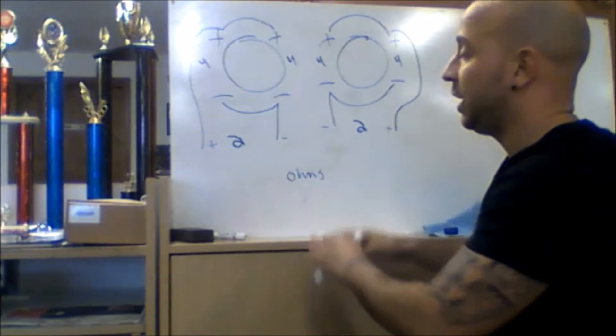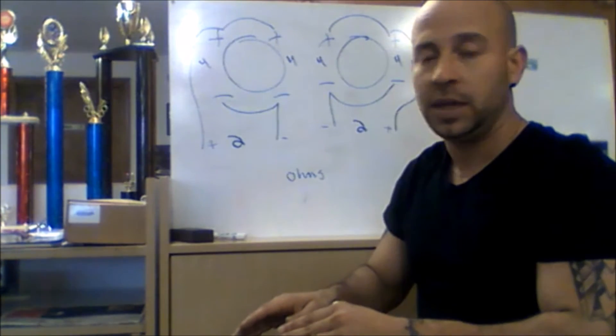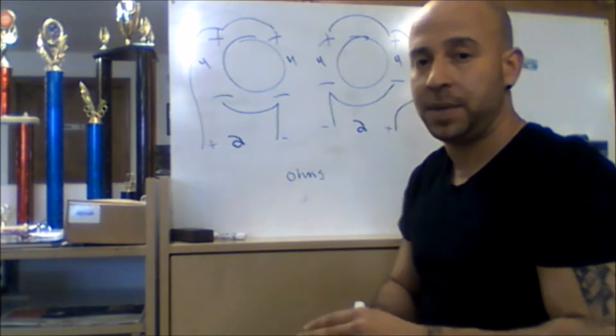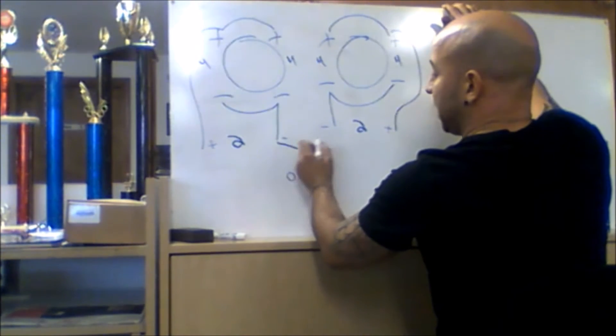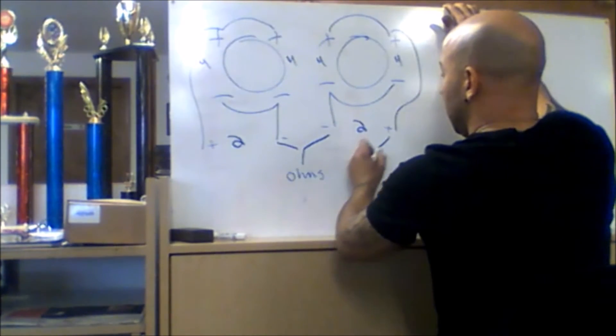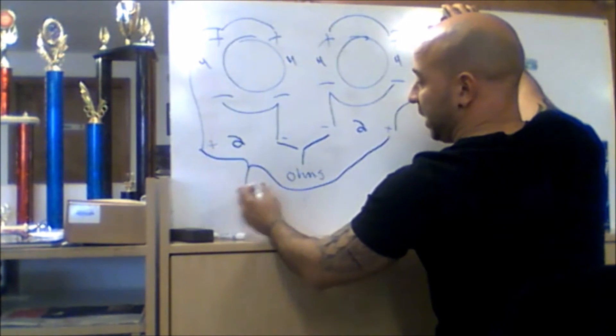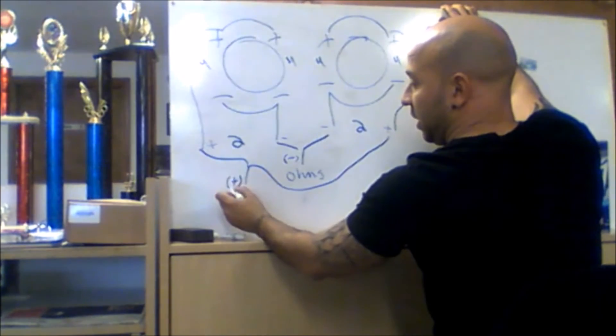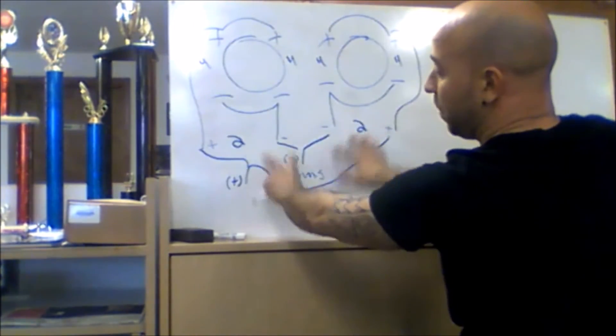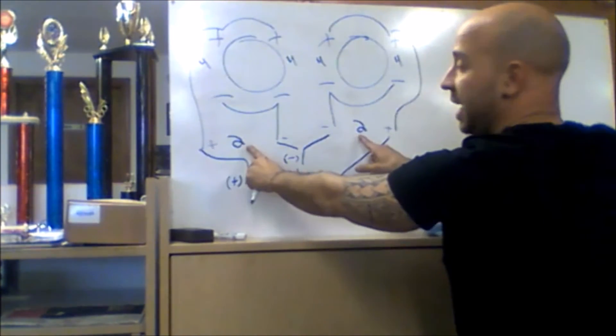If you have a one ohm amp, you can go one step further. Put these two blacks together, put these two positives together. It's another parallel circuit, so you're parallel parallel, which will divide your twos into one.